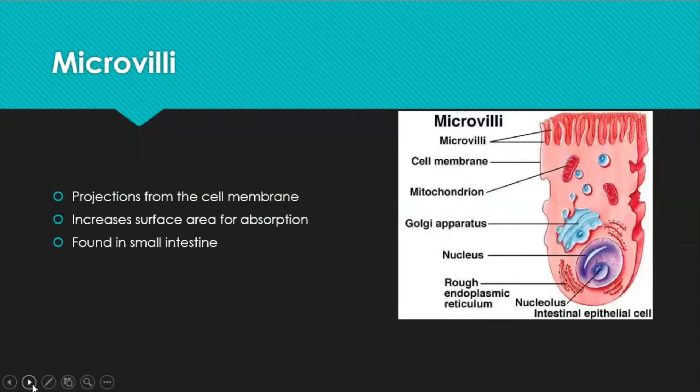Microvilli are small projections from the cell membrane. Unlike cilia, they are involved in absorption of material rather than movement — they increase the surface area for greater absorption. Microvilli are present in the small intestine to absorb simple nutrients into the blood.